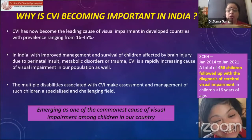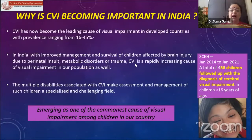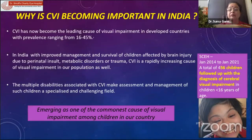Why is everyone talking about CVI? In India, with improved management and survival of children affected by brain injury due to perinatal insult, other metabolic disorders, or trauma, it is becoming the cause of visual impairment in our population. And along with that, even in multiple disability with visual impairment, many of them are children with CVI. So if we have to make assessments and manage our children, though it is a very challenging field, we need to move forward.